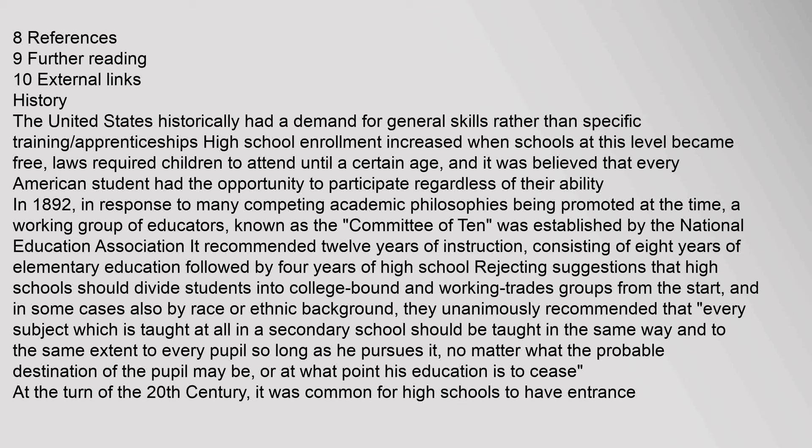In response to many competing academic philosophies being promoted at the time, a working group of educators known as the Committee of Ten was established by the National Education Association. It recommended 12 years of instruction, consisting of 8 years of elementary education followed by 4 years of high school, rejecting suggestions that high schools should divide students into college-bound and working trades groups from the start, and in some cases also by race or ethnic background.